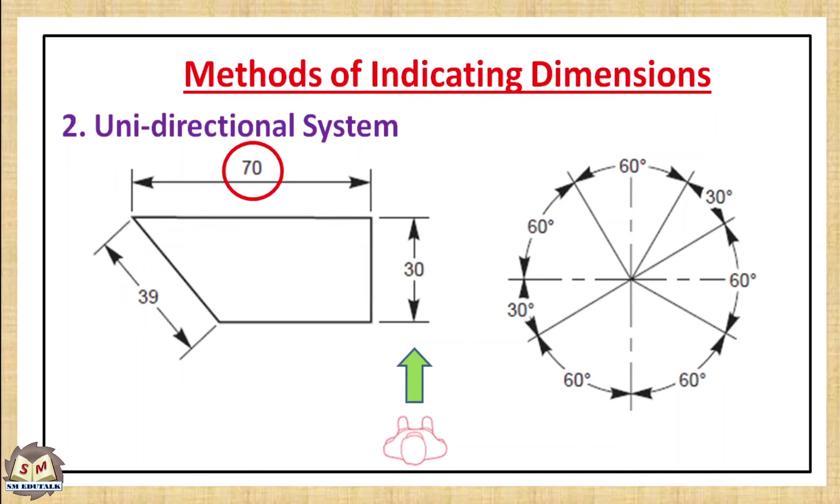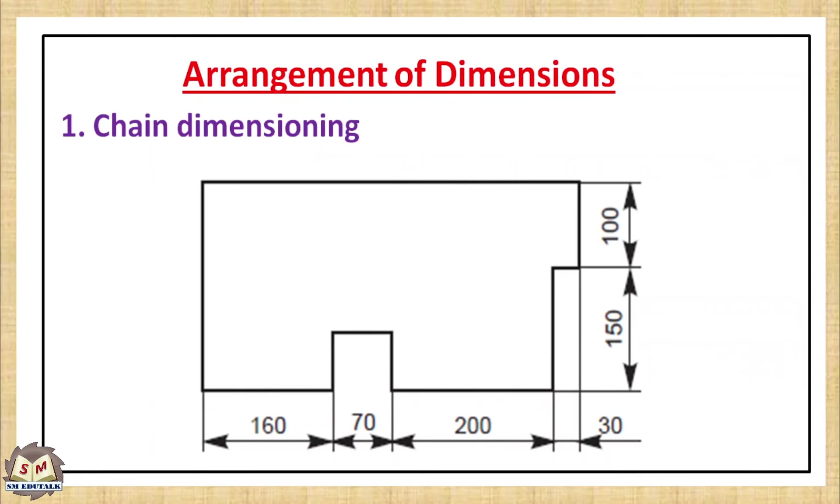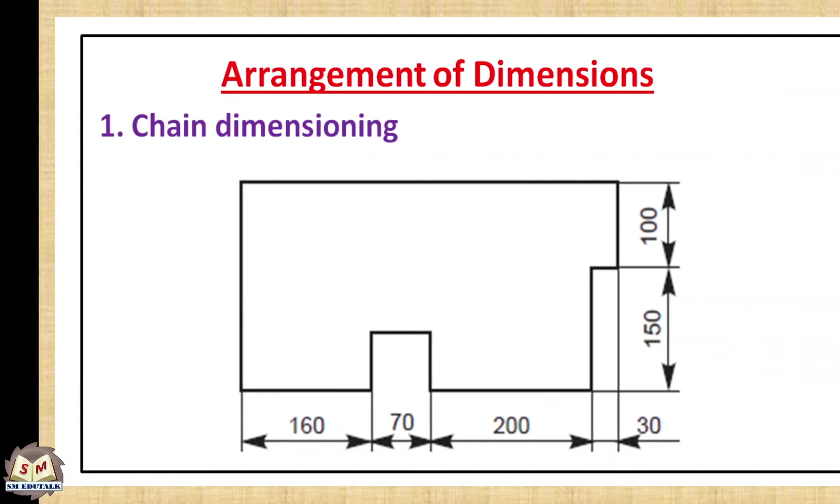Arrangement of dimensions. There are five types of dimension styles used on drawing. The first one is chain dimensioning. When each single dimension line is placed directly adjacent to the next dimension line without any gap between dimension lines, then that style of dimensioning is called chain dimensioning. That is, the dimension lines are placed in series.